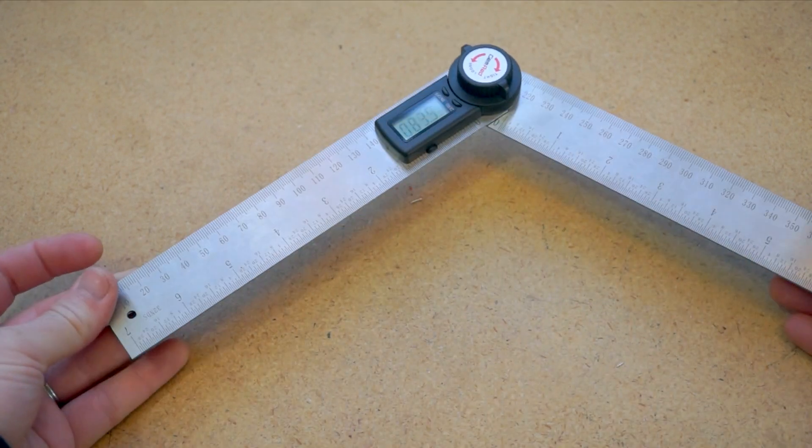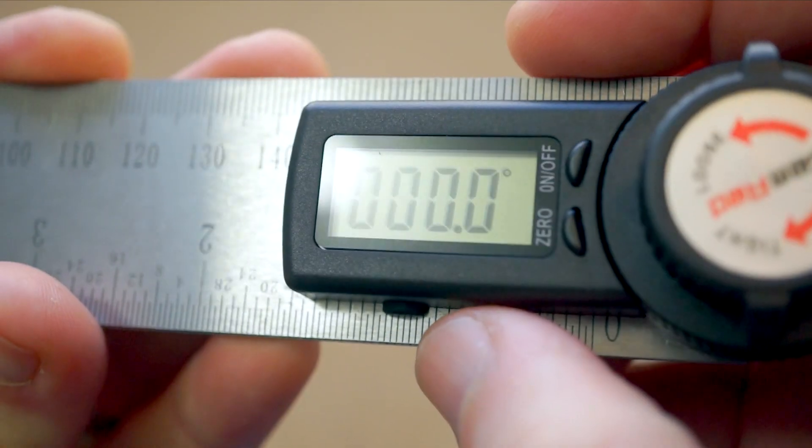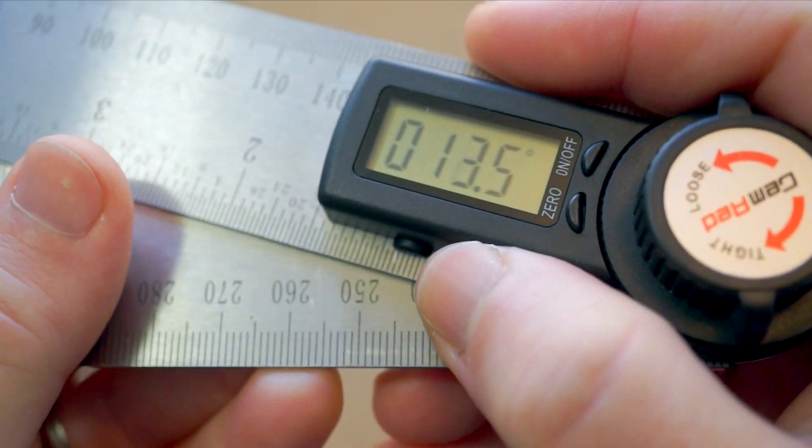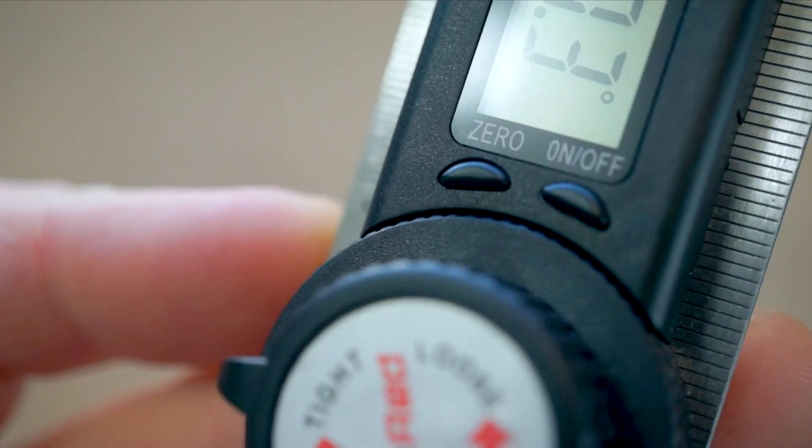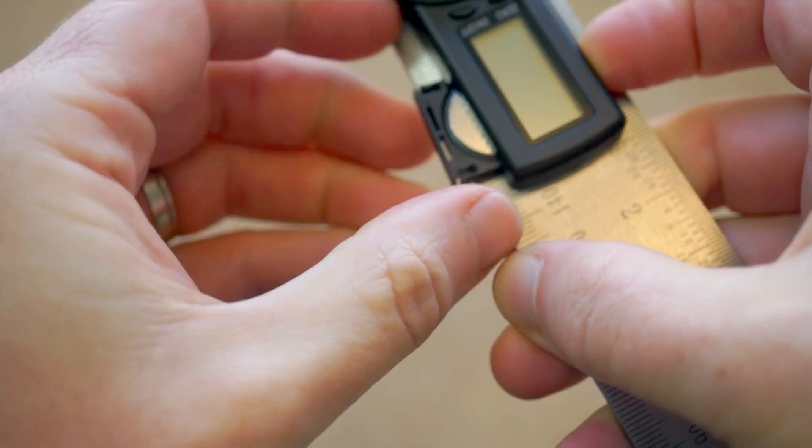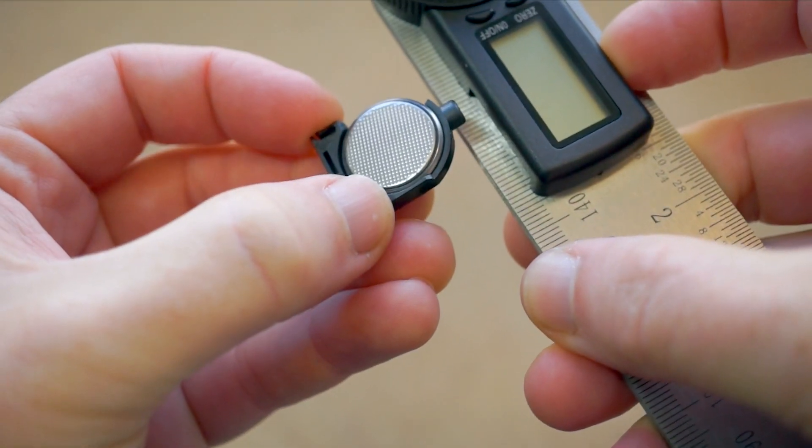The angle ruler is essentially two 7 inch rulers hinged in the middle. A display shows you the angle in degrees. You get an on-off button and a button to zero out the measurement. An included lithium coin cell battery slots in from the side.